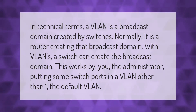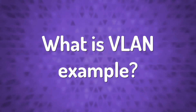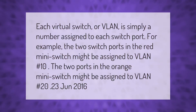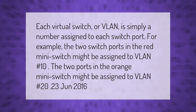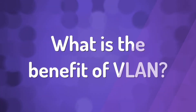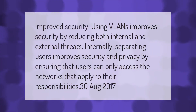This works by the administrator putting some switch ports in a VLAN other than one, the default VLAN. Each virtual switch or VLAN is simply a number assigned to each switch port. For example, the two switch ports in the red mini switch might be assigned to VLAN number 10, and the two ports in the orange mini switch might be assigned to VLAN number 20.